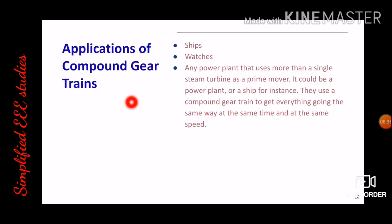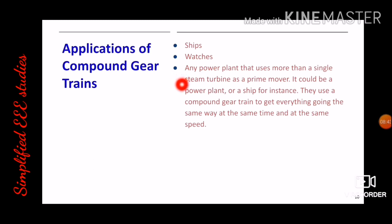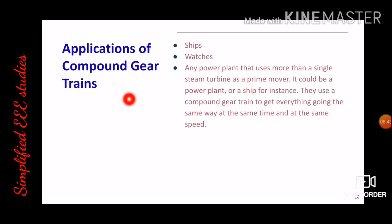Applications of compound gear trains include use in ships, watches, and steam power stations. Any power plant using more than a single steam turbine as a prime mover can use this type of gear mechanism.